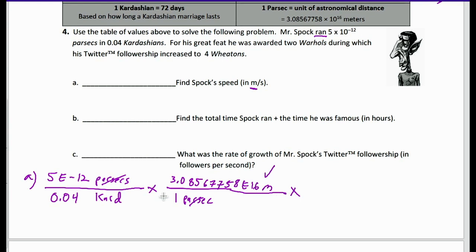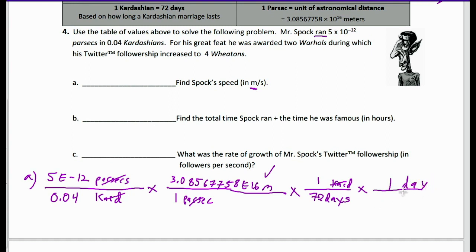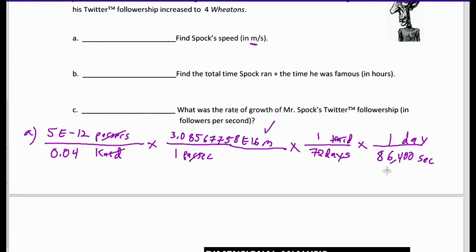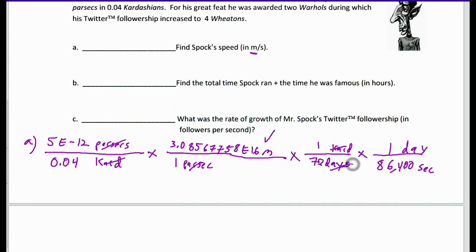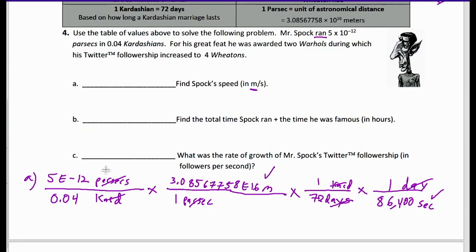One Kardashian is equivalent to 72 days, so Kardashians on the bottom here and 72 days on top. Now I just have days. To get rid of days, one day is equivalent to 24 hours, and there are 3,600 seconds in an hour. Taking that shortcut, 24 times 3,600 tells me there are 86,400 seconds in one day. Days cancel out, leaving meters on top and seconds on the bottom — everything I need. Multiplying through, Spock's speed is about 0.62 meters per second.